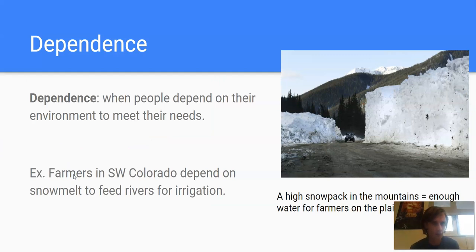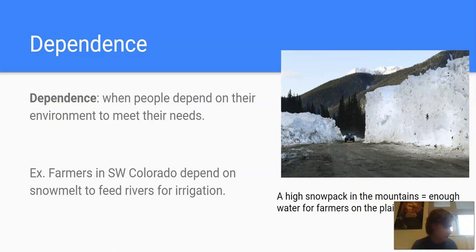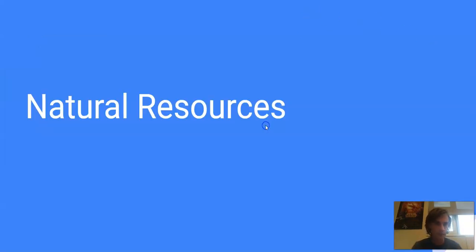Dependence is our next term. Dependence happens when people depend on their environment to meet their needs. An example in Colorado would be farmers depending on the snow melt from the mountains to feed the rivers for irrigation. If you go up high in the mountains, you'll often see these epic snow packs — bigger than cars — and those are important so that farmers in the plains have enough water to feed their crops every year. We also depend on natural resources for much of our lives, so let's talk about natural resources next.